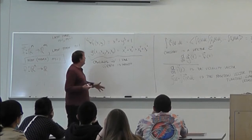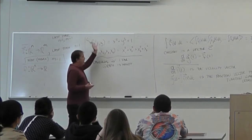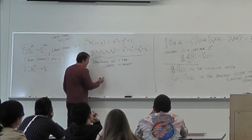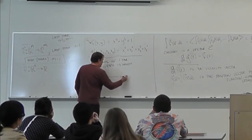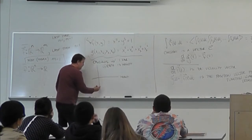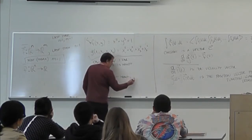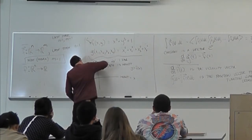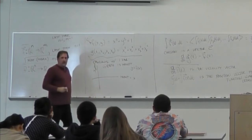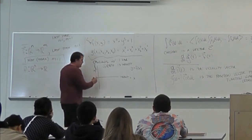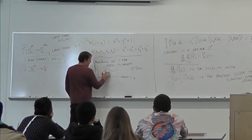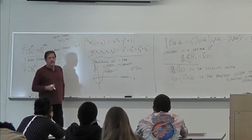Let's think about what the graph would be. In one variable: we draw a line for the input x, and another line for the output y = f(x). Then we plot all the pairs (x, f(x)), and that gives us the graph.